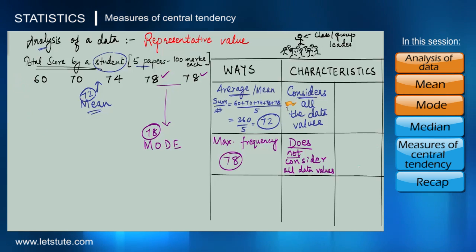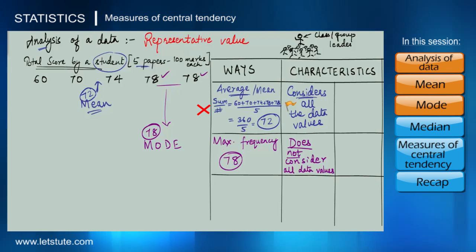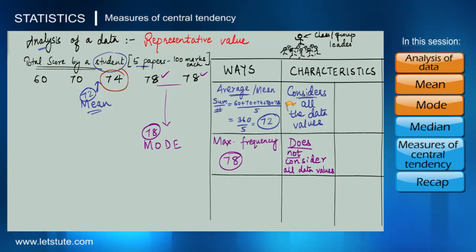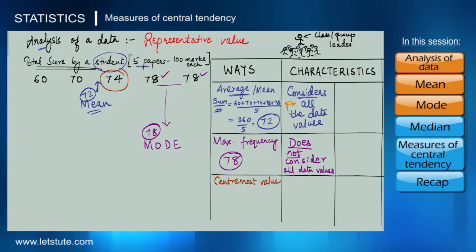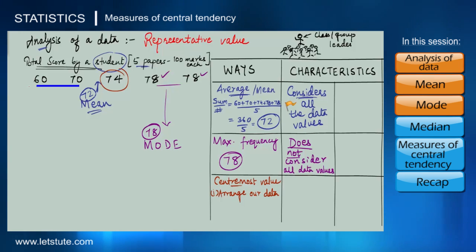At times we want the representative value to be the one that falls right in the middle of the data — not the average and not the maximum frequency value, but the centermost value. To find this centermost value, the first step is to arrange our data in ascending or descending order. In this case the data has already been arranged, so we keep it as is.